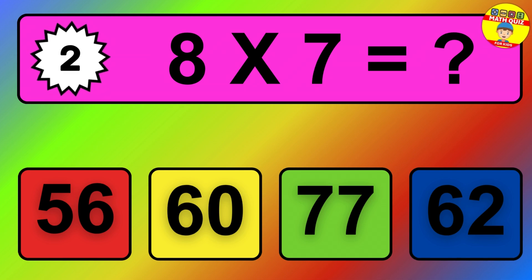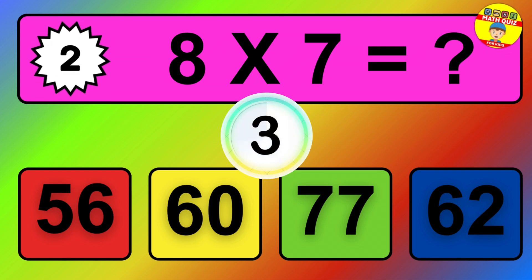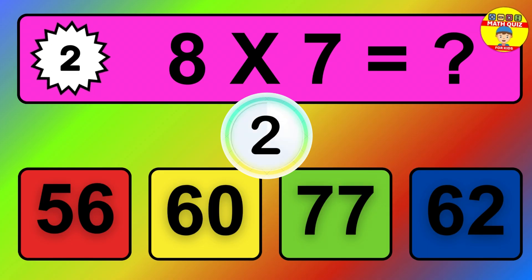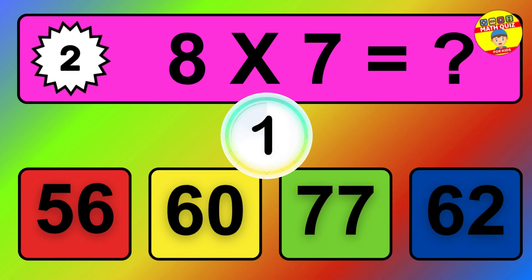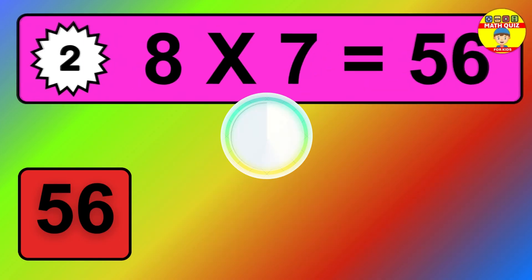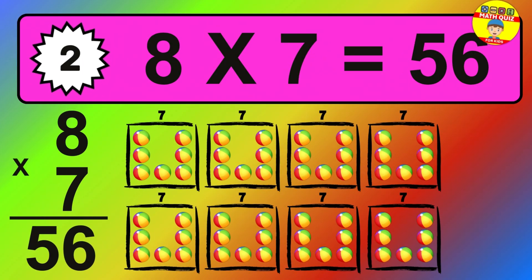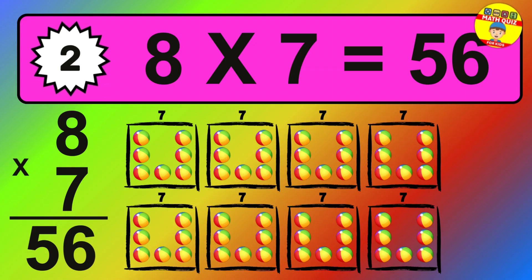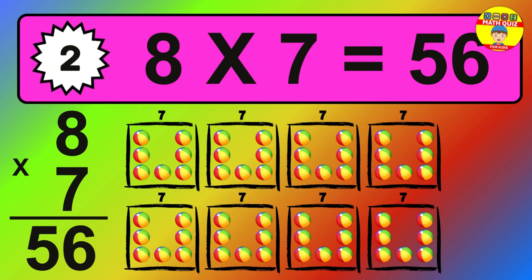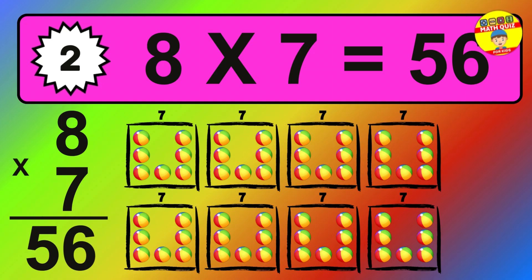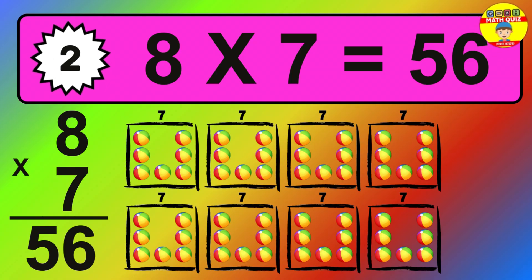Question two: eight times seven equals what? The answer is: eight times seven is 56. To calculate, we have eight groups with seven balls each one. So how many balls do we have? 56 balls.